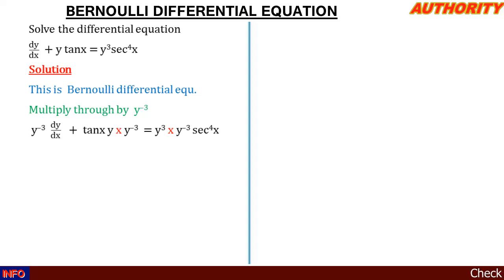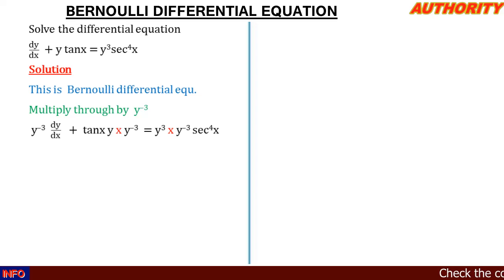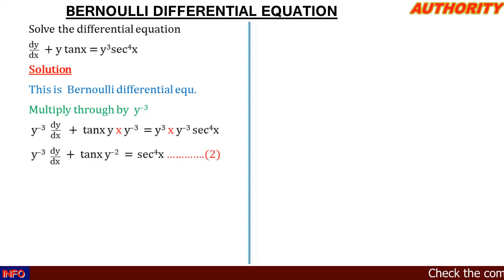In the center term where we have y multiplied by y^(-3), using the law of indices we add their powers since they have the same base. The first one has power 1, the second is minus 3, so 1 minus 3 gives us minus 2. So we have y^(-3) · dy/dx plus tan(x) · y^(-2) equals sec^4(x).